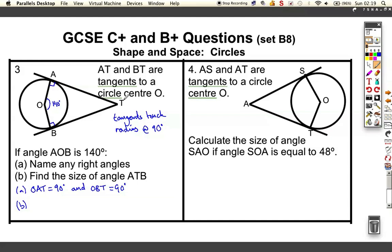This time we're asked to find angle ATB. If we consider around the outside here, that shape is actually a quadrilateral. Quadrilaterals add up to 360. So I've got 90 plus 90 plus 140, which is 320. So to make a total of 360, ATB must be just 40 degrees.